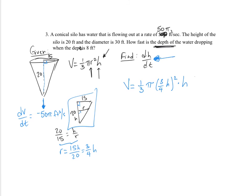Cleaning this up: squaring three-fourths gives 9 over 16, and multiplying by the one-third gives 9 over 48 on the bottom. So V = 9 over 48 pi h cubed, which simplifies with the h squared times h giving h cubed. Now differentiating: dV/dt = 9 sixteenths pi times h squared times dh/dt.